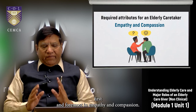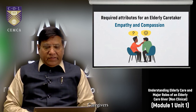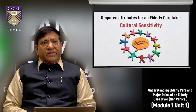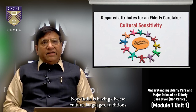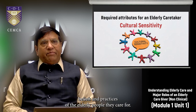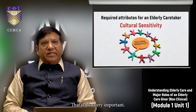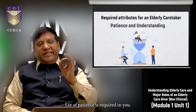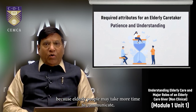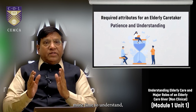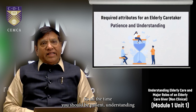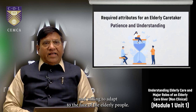There are certain attributes required in an elderly caretaker. First and foremost is empathy and compassion — caregivers should demonstrate genuine concern and empathy towards the elderly people they care for. Cultural sensitivity is also vital, as India has diverse cultures, languages, and traditions, so respecting and understanding the cultural backgrounds, beliefs, and practices of elderly people is very important. Patience and understanding is also essential — a lot of patience is required because elderly people may take more time to communicate, understand, and perform tasks.